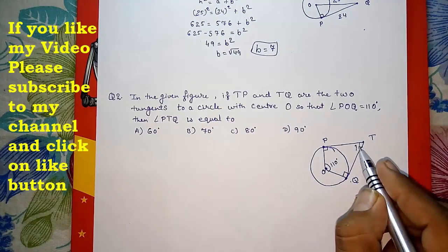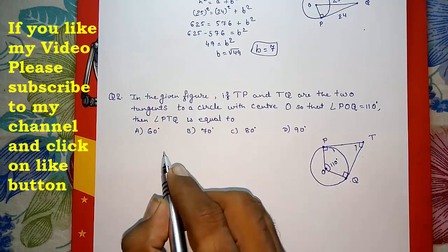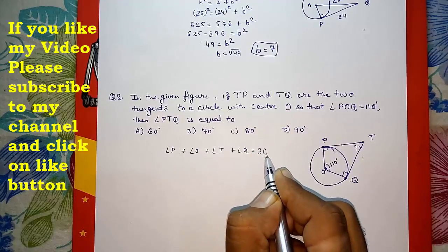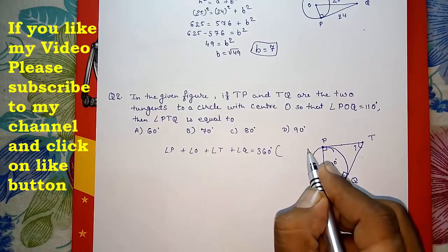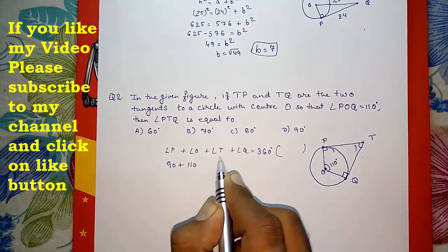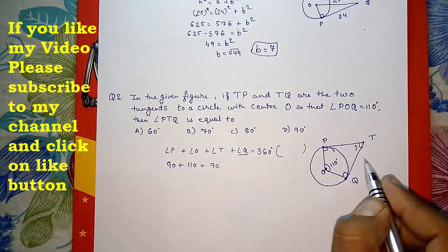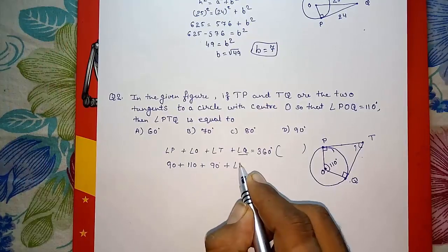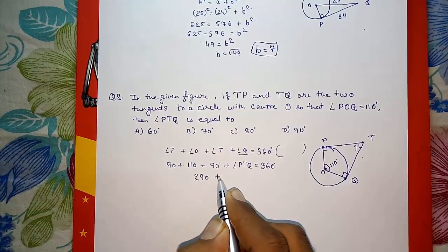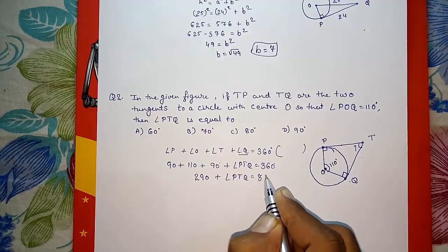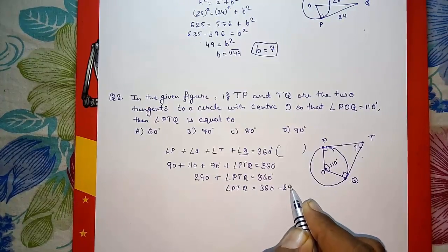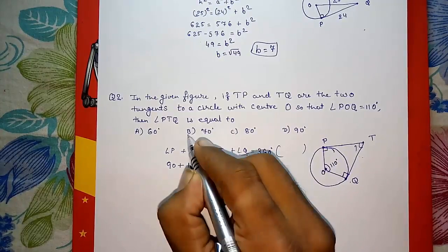We can find angle PTQ using the angle sum property of a quadrilateral. Angle P + angle O + angle Q + angle PTQ = 360°. Substituting: 90° + 110° + 90° + angle PTQ = 360°, so 290° + angle PTQ = 360°, therefore angle PTQ = 360° − 290° = 70°. The answer is B.